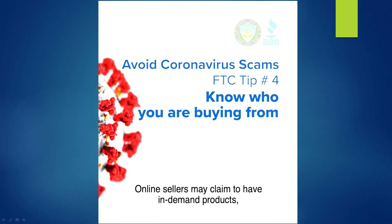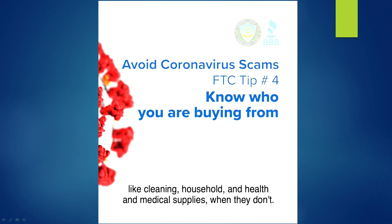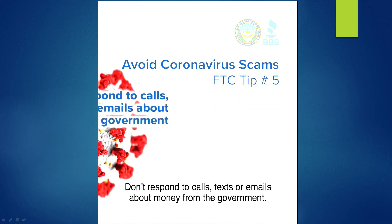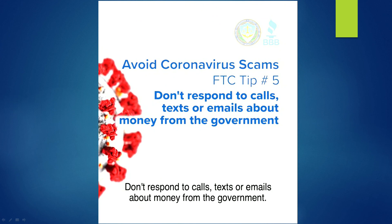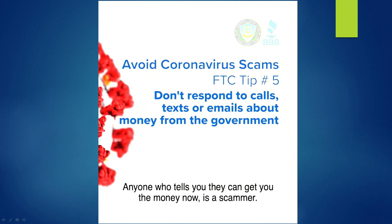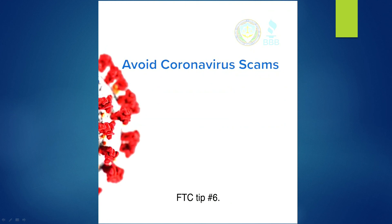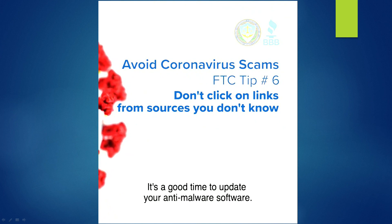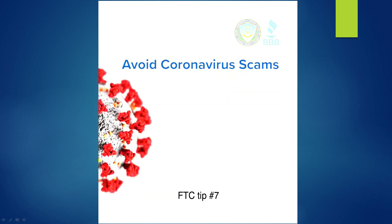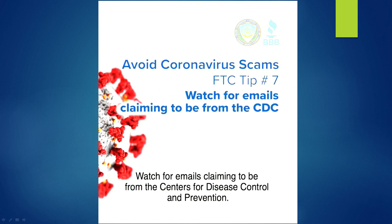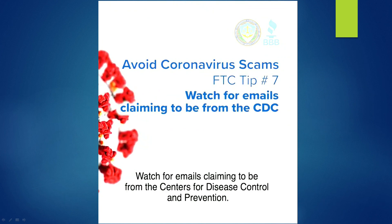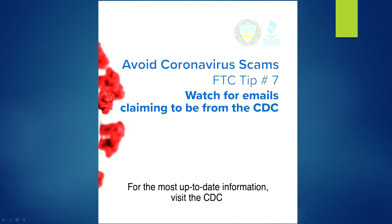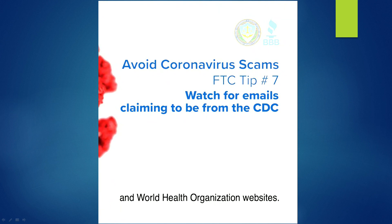FTC tip number four: know who you're buying from. Online sellers may claim to have in-demand products like cleaning, household, and health and medical supplies when they don't. FTC tip number five: don't respond to calls, texts, or emails about money from the government — anyone who tells you that they can get you the money now is a scammer. FTC tip number six: don't click on links from sources you don't know; it's a good time to update your anti-malware software. FTC tip number seven: watch for emails claiming to be from the Centers for Disease Control and Prevention — the agency doesn't email people directly. For the most up-to-date information, visit the CDC and World Health Organization websites.